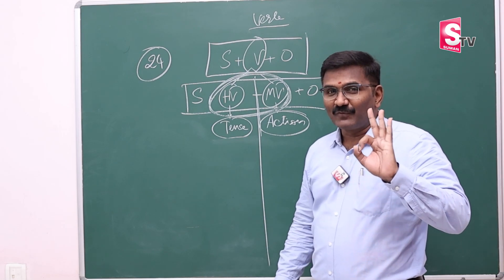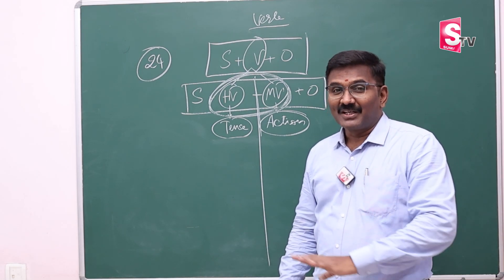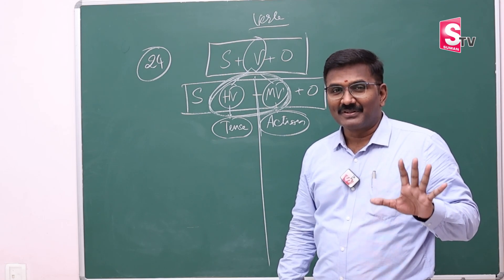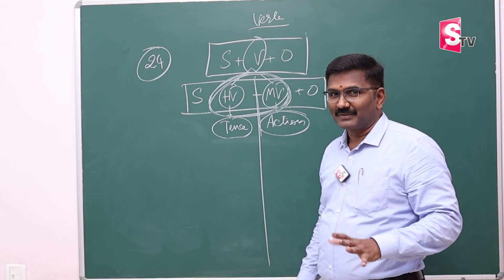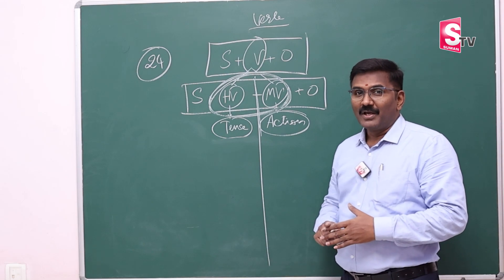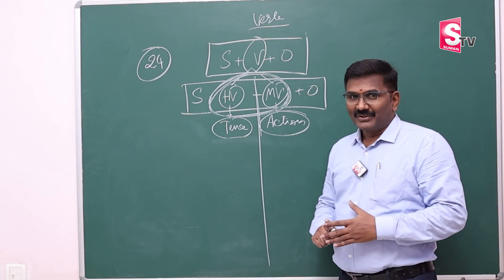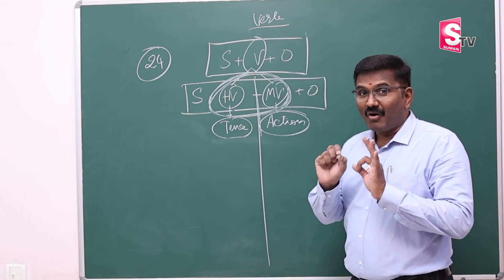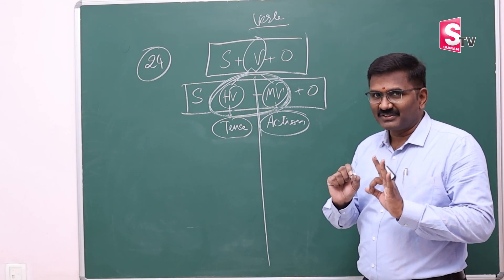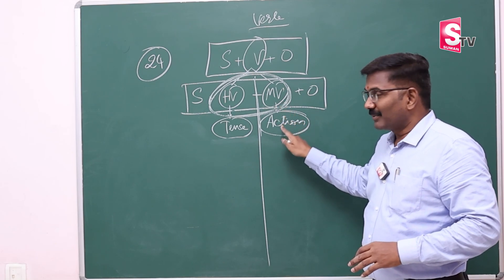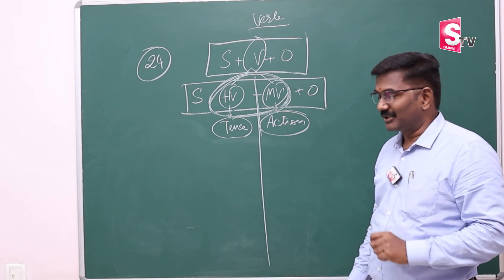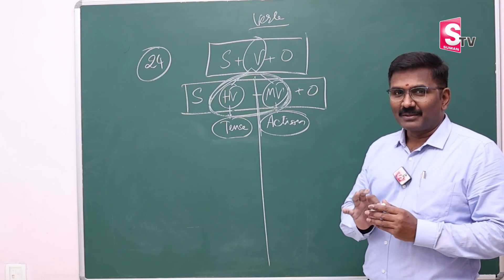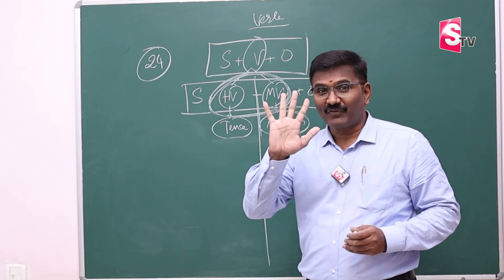There are 24 helping verbs and we must learn sentences with these 24 helping verbs. If we can construct sentences with these 24 helping verbs, we can communicate any feeling in English with flying colors. Come on, friends, practice sentences with 24 helping verbs. Now, coming to the main verb — the main verb denotes action. Remember, helping verb and main verb together are called a verb.